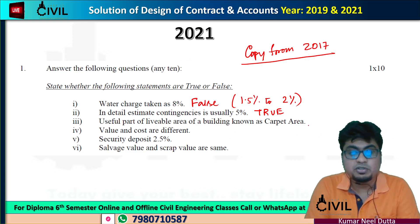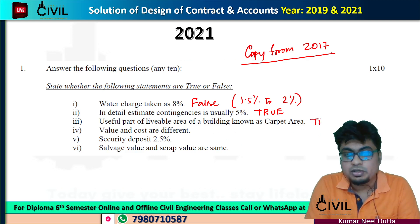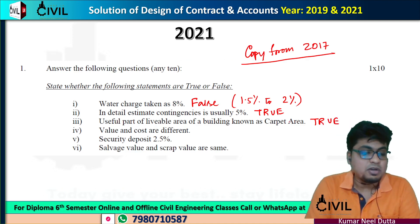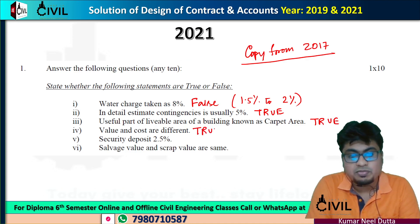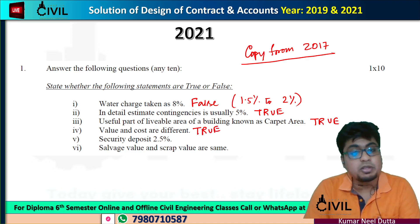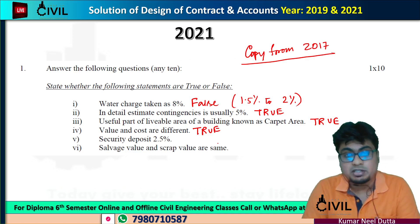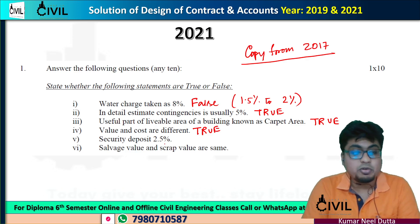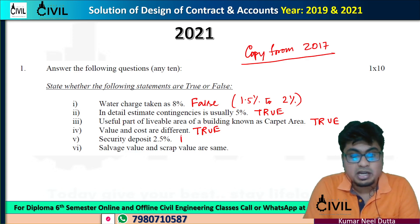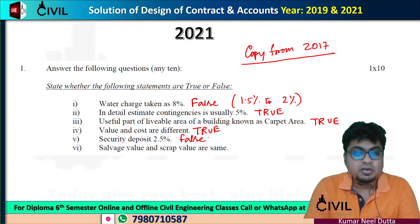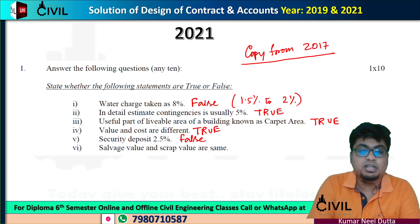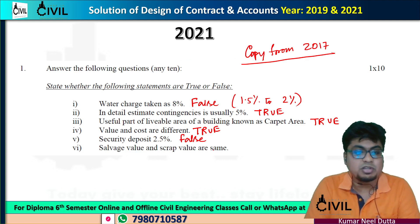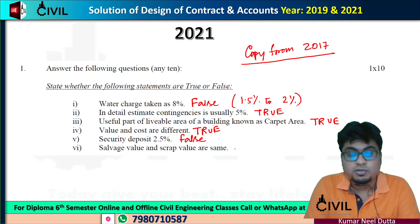The useful part of a liveable area of a building is known as carpet area, so it is true. Next, value and cost are different — it is also true. Remember, in the dismantled condition, your scrap value is done without dismantling and salvages. So it is also false.